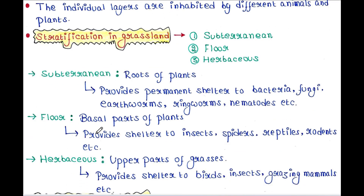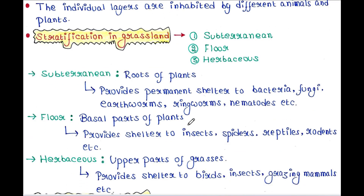Next is the floor layer. The floor contains the basal parts of plants. It provides shelter to insects, spiders, reptiles, rodents, etc.